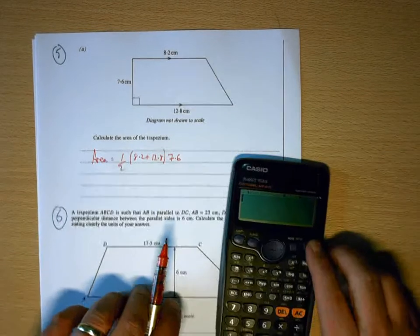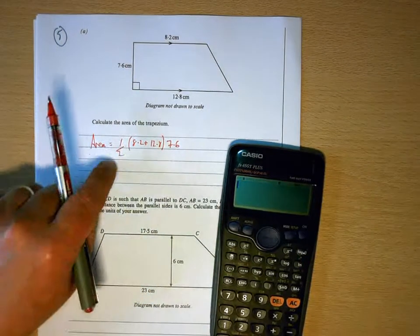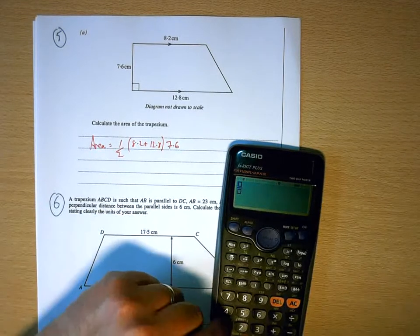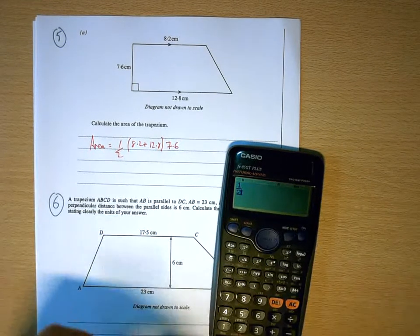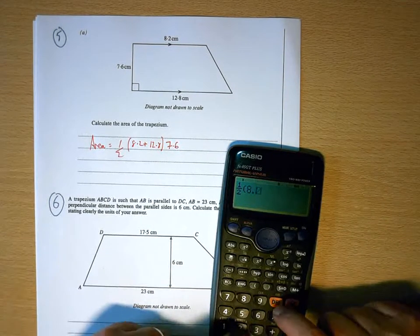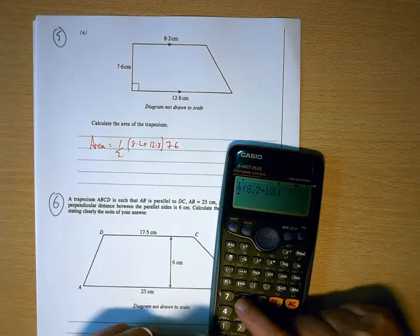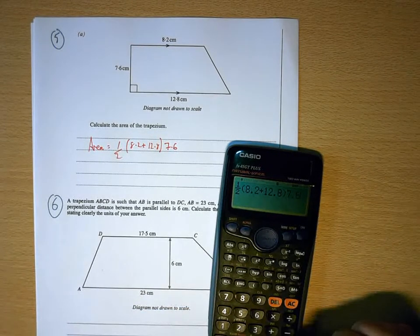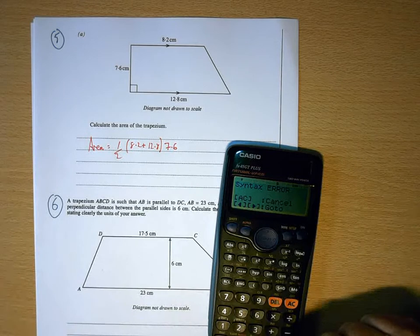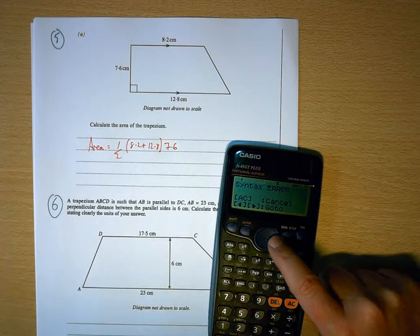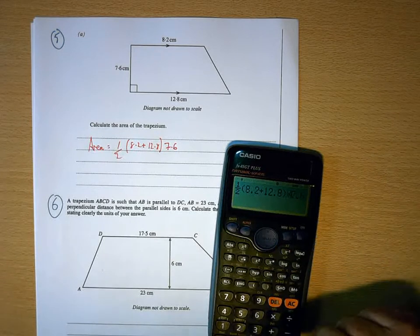Now, on our calculators, if we wanted to, we could just write it in the same way that it is there. So there's our half. Open bracket, 8.2 plus 12.8. Close bracket, 7.6. Doesn't work.